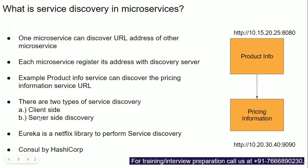There are two types of service discovery: client-side service discovery and server-side service discovery. Eureka is a library provided by Netflix that can perform service discovery. Consul, provided by HashiCorp, can also do service discovery. Service discovery allows you to identify or discover the URL of another microservice.